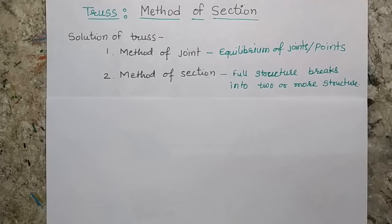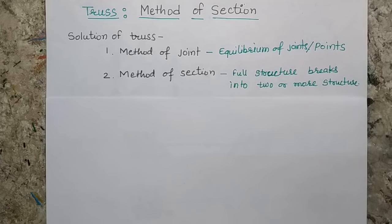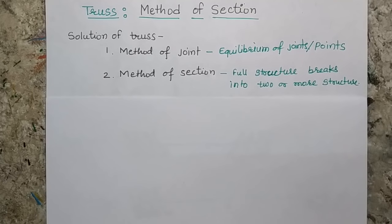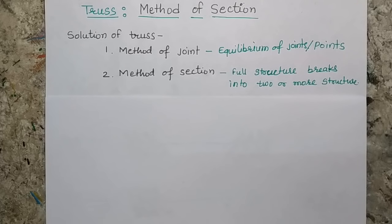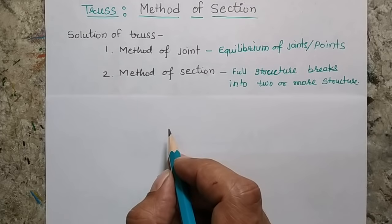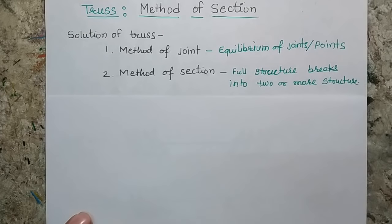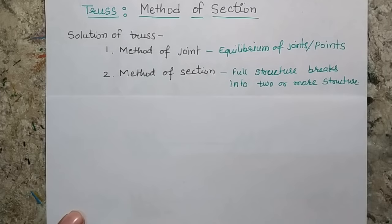We have already seen the procedure of the method of joint in our previous sessions. In this session, we are going to focus on the method of section. I would like to give a brief difference between these two methods. In the method of joint, our main focus is to consider the equilibrium of different joints.